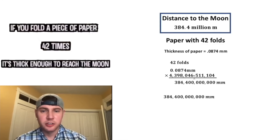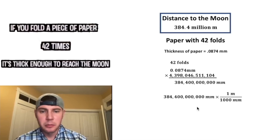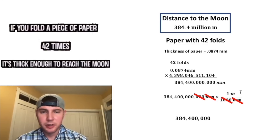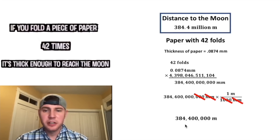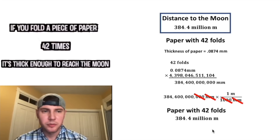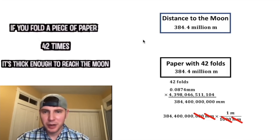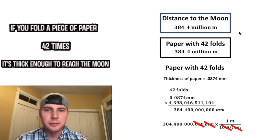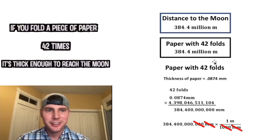So let's copy that down — this was in millimeters, so let's convert to meters. There's 1 meter for every 1,000 millimeters. When we multiply these, the millimeters cancel out, and we divide top and bottom by 1,000, which just gets rid of 3 zeros for both. This is 384,400,000 meters, or in other words, 384.4 million meters. Let's give it a label — this represents a paper with 42 folds. Let's bring this box up and compare: the distance to the moon is 384.4 million meters, and a piece of paper with 42 folds is 384.4 million meters. The math checks out. How exciting!